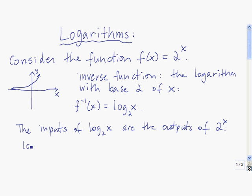For example, log base 2 of 8: the number 8, since it's the input of log base 2 of x, 8 is the output of 2 to the x. So the value of log base 2 of 8 is the number to which 2 must be raised so that 8 is the answer — what comes out of the log is the input needed to produce it. So 2 to what power is 8? We know that 2 cubed is 8, so log base 2 of 8 is equal to 3.